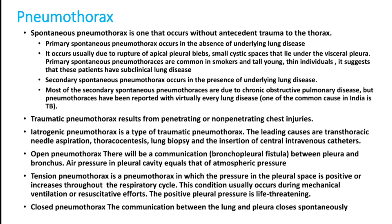Blebs and bullae are small cystic spaces that lie under the visceral pleura. Primary spontaneous pneumothorax is common in smokers and tall, young, thin individuals. Secondary spontaneous pneumothorax occurs in the presence of underlying lung disease like tuberculosis, cavitary lung lesions, etc. Most secondary spontaneous pneumothorax cases are due to chronic obstructive pulmonary disease in smokers.